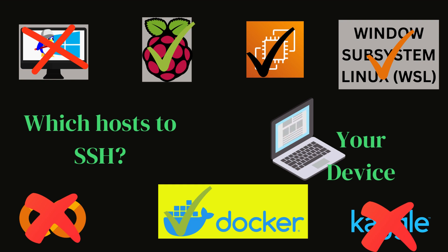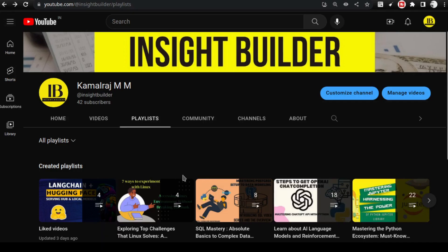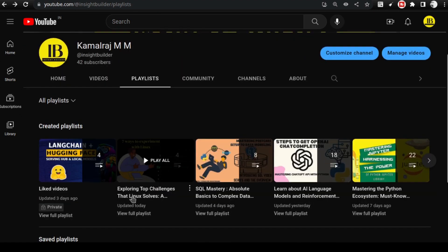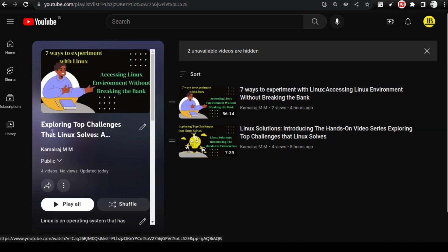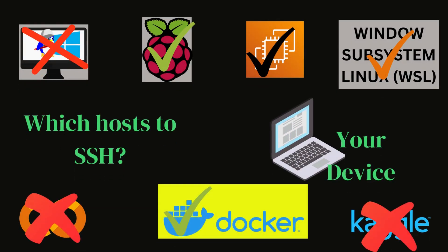In an earlier video — do take a look at that playlist on my YouTube channel — you will find the series on Linux exploring top challenges that Linux solves. It covers seven different ways of getting access to Linux and experimenting with it. Out of those seven ways, four different Linux environments can be worked with using SSH. The remaining three — Google Colab, Kaggle, and local or dual-boot installation — don't require SSH or you cannot do SSH, so there are challenges there.